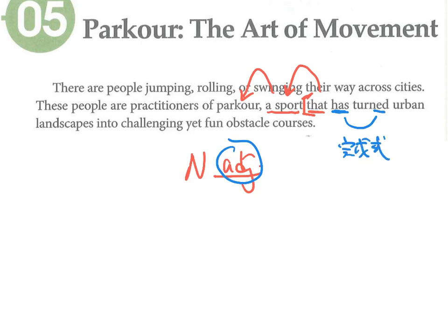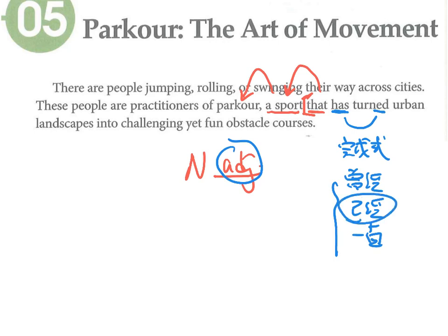这个运动是什么样的运动呢？'that has turned'，这边有has加上PP，这就是完成式了。完成式中文翻译可以是曾经、已经，或一直，看句子状况。这里翻译成已经。has turned把什么变成——turn。